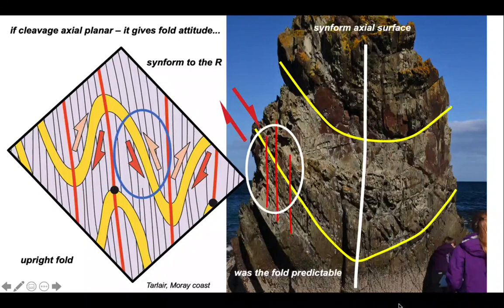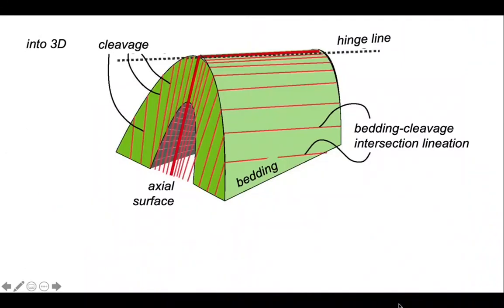This is a two-dimensional representation. Let's remind ourselves of the three-dimensional relationship between cleavage and folds. If the cleavage is more or less axial planar, then the intersection of bedding with cleavage is parallel to the fold hinge line. Another really useful relationship. The plunge of the bedding-cleavage intersection will be the plunge of the fold hinge line.